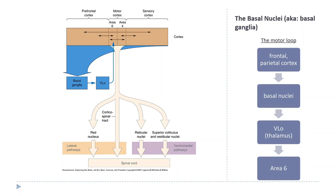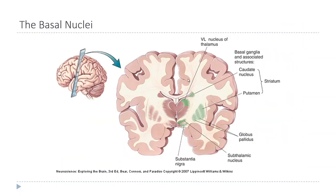This forms what's called the basal nuclei motor loop, because it consists of a connection from the cortex to the basal nuclei, then the thalamus, and then back to the cortex again. The job of the basal nuclei is to help regulate or control the input to the motor cortex, which sends commands to motor neurons to control movement — essentially controlling which commands are executed and which aren't.